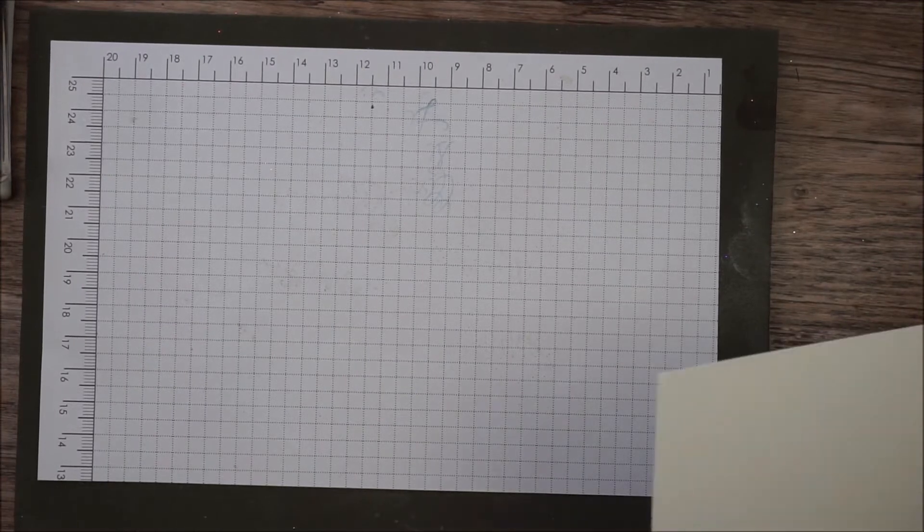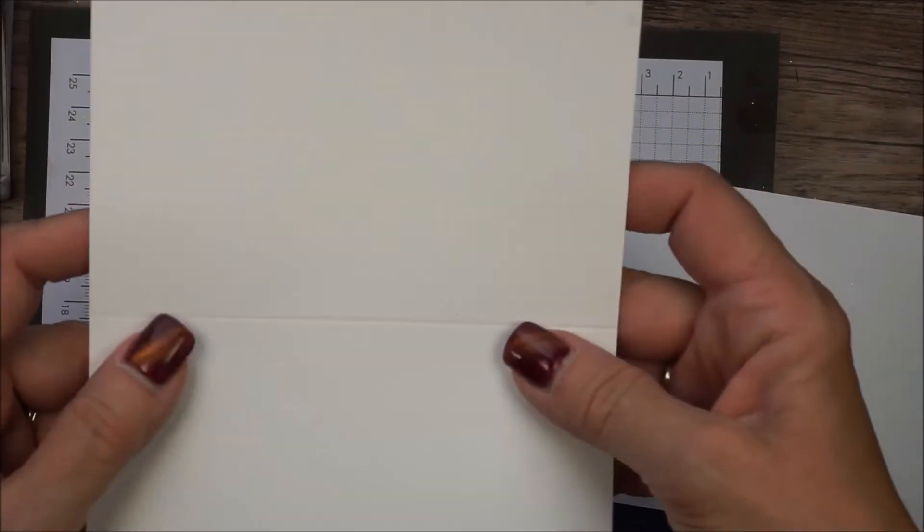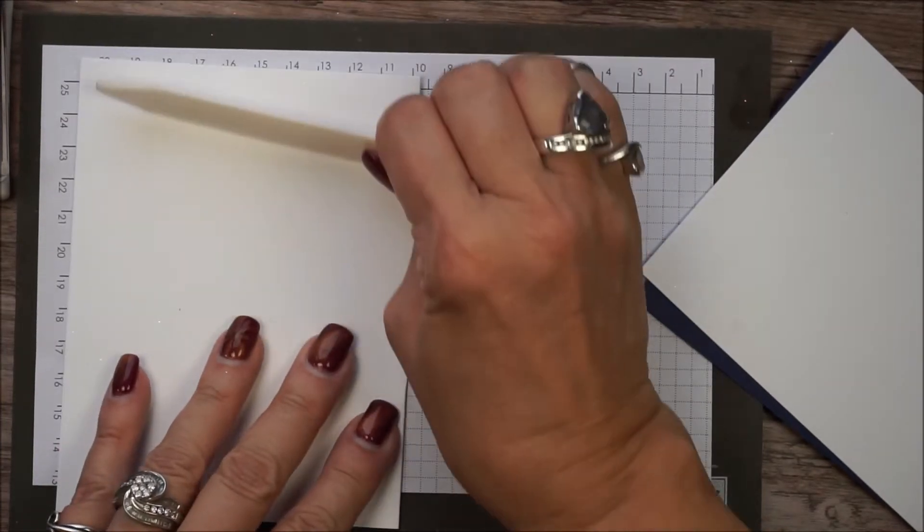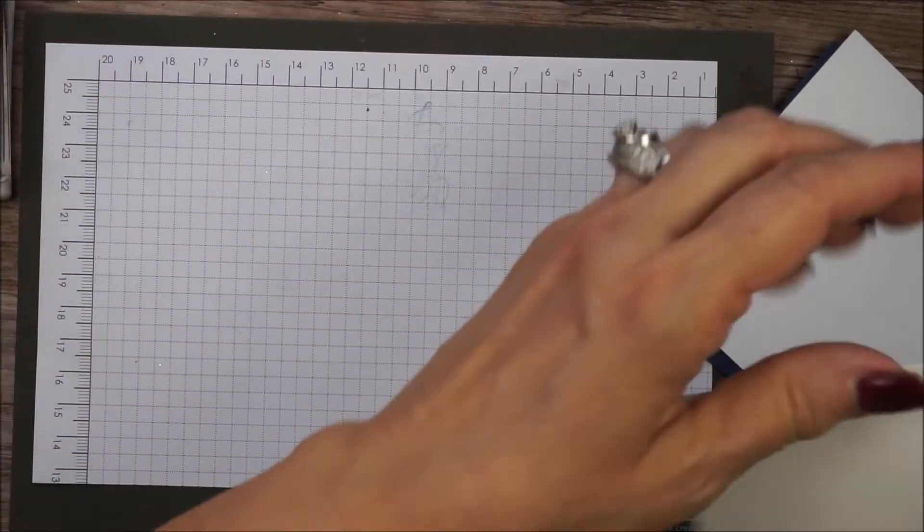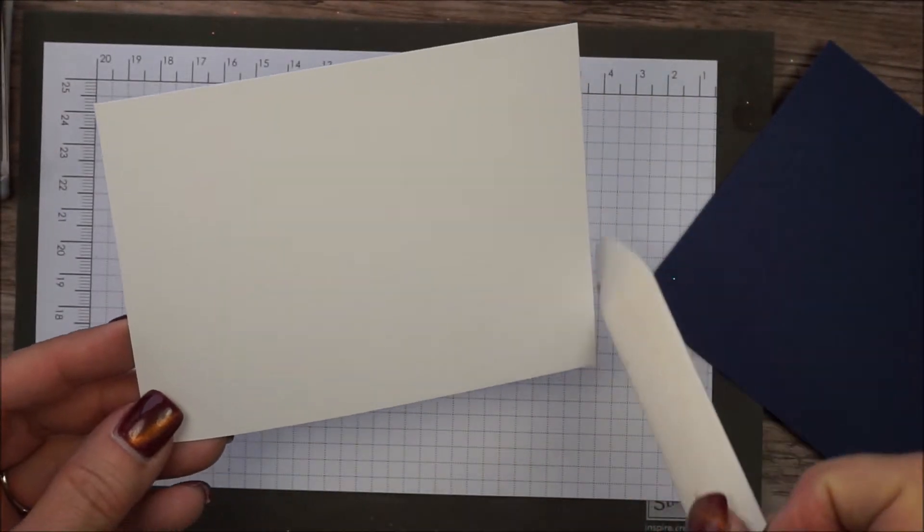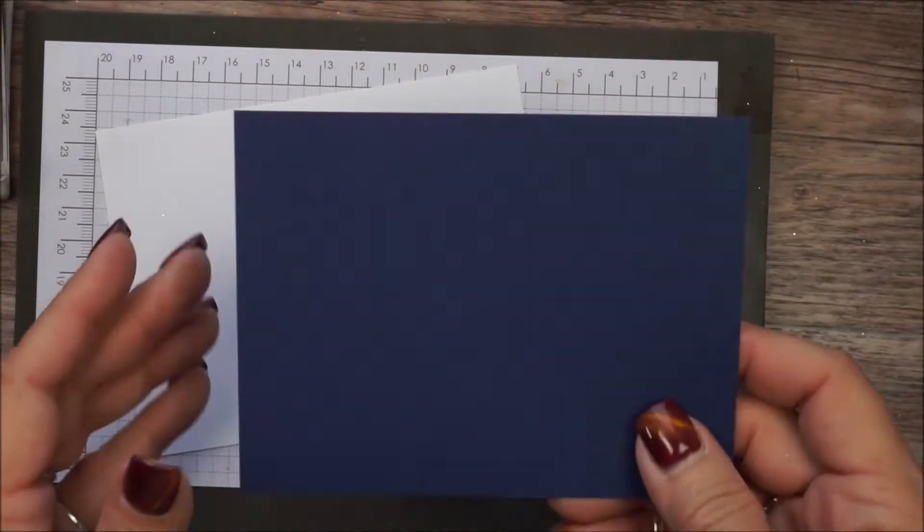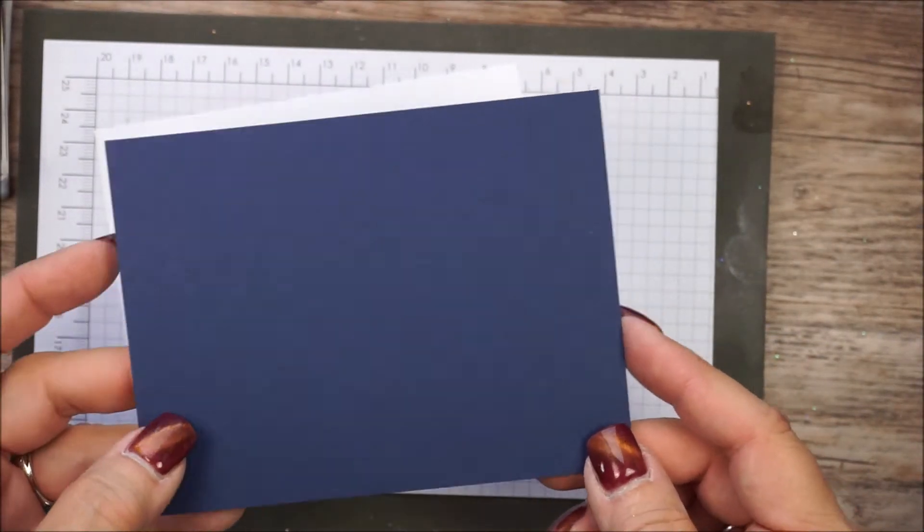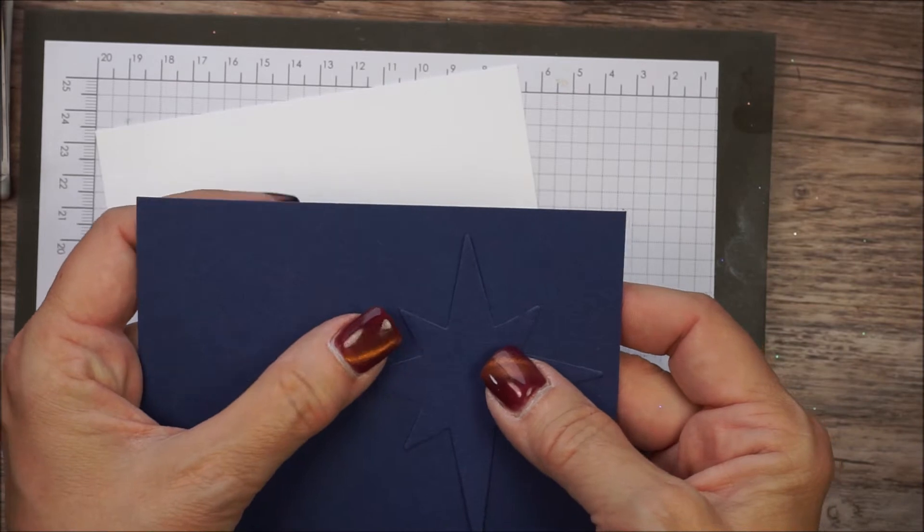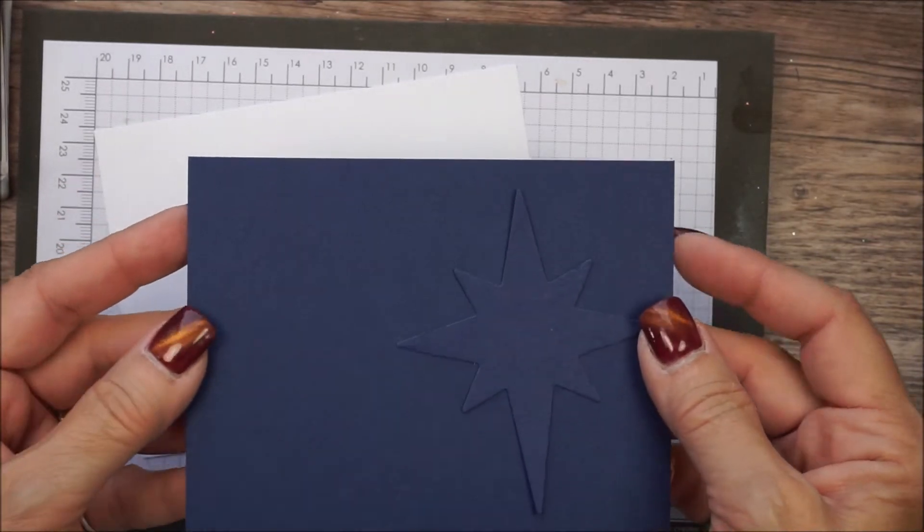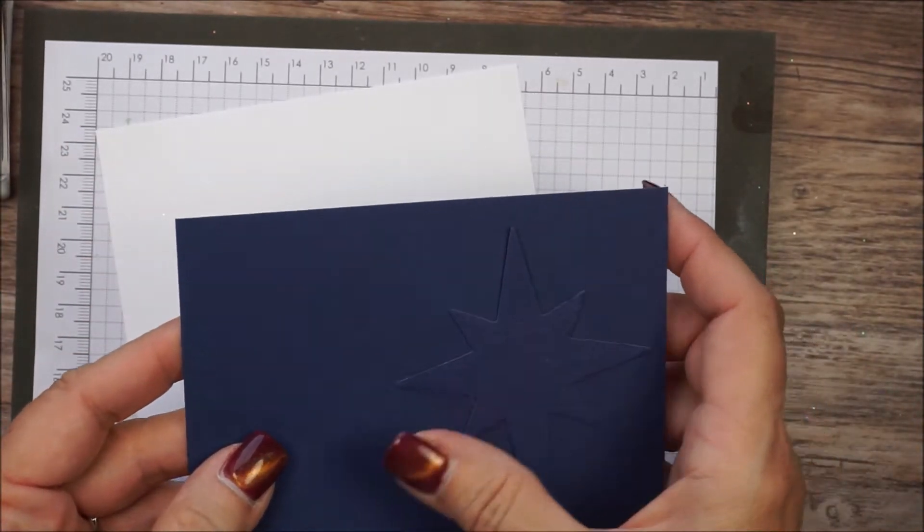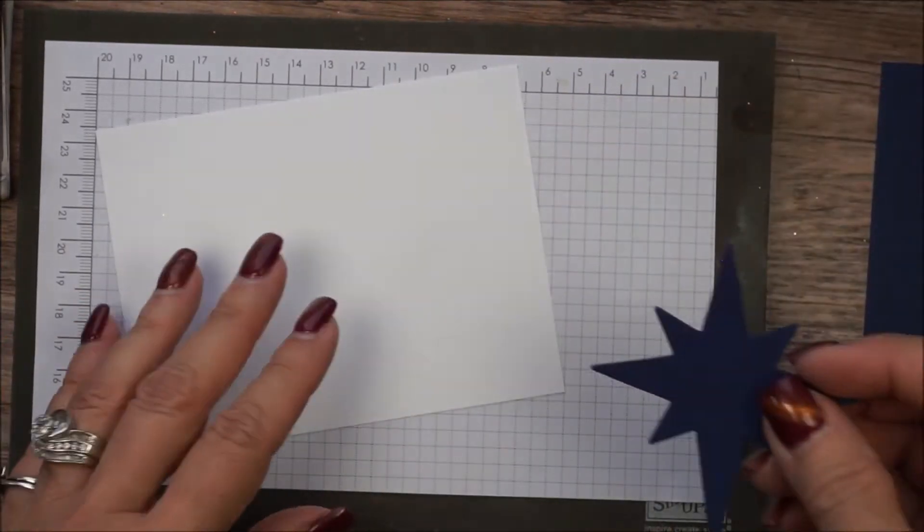For this card, you're going to need a whisper white card base. Go ahead and fold that. Use our bone folder. Give it a good crease. Then you have a whisper white layer. This is five and a quarter by four inches and then about this size piece of cardstock is needed just to cut out those bigger stars. You will have plenty of scraps left over, but this piece is five and a quarter by four inches as well. I'm going to use the rest of the paper on other cards with this stamp set. That's just to let you know.